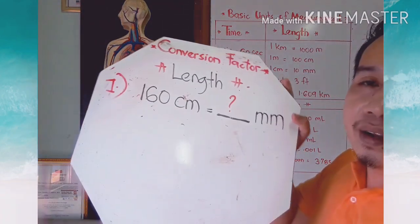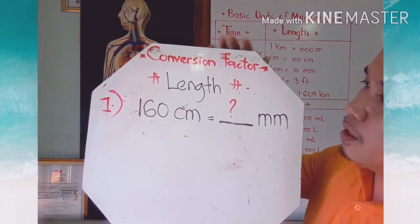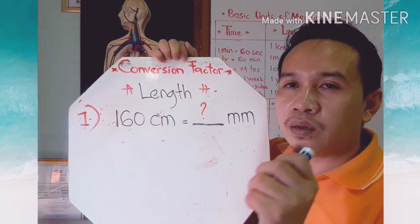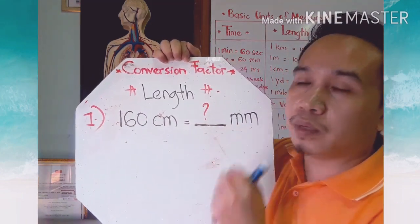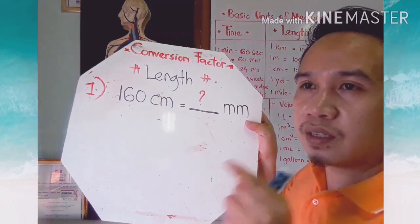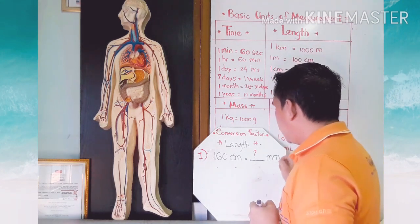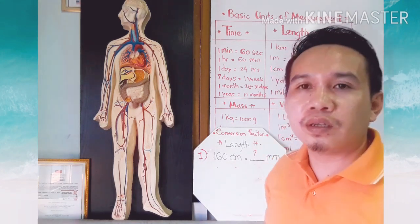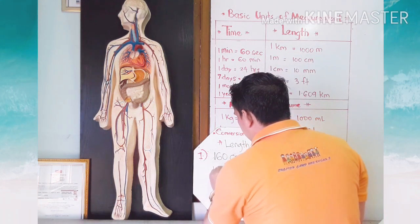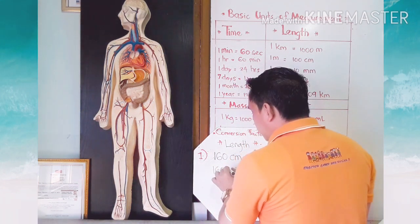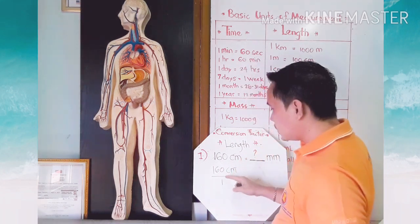I'm going to show you a sample problem on how to convert numbers for length. We will convert a given number to millimeters step by step. How many millimeters are there in 160 centimeters? First, copy this number and write the unit at the top, then put 1 at the bottom to make it a fraction.